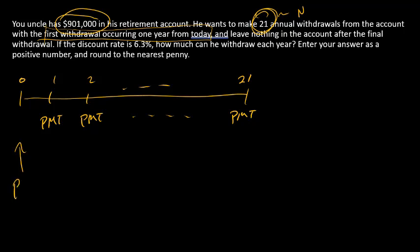We know that the PV at time zero is equal to $901,000, and then at the end of this retirement period we want nothing left. Your uncle is going to swap this amount...